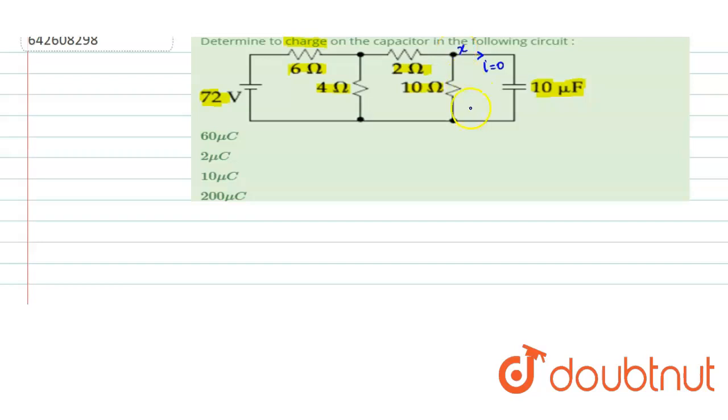All we have to find is the potential difference between these two points in the steady state, x and y. So let's draw the equivalent circuit in the steady state.